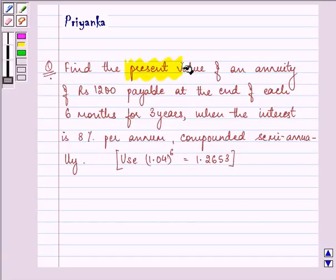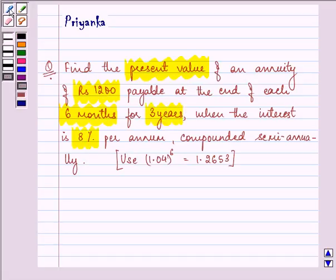find the present value of an annuity of Rs. 1200 payable at the end of each 6 months for 3 years when the interest is 8% per annum compounded semi-annually. Here we need to use the value of 1.04 raised to the power 6 as 1.2653.